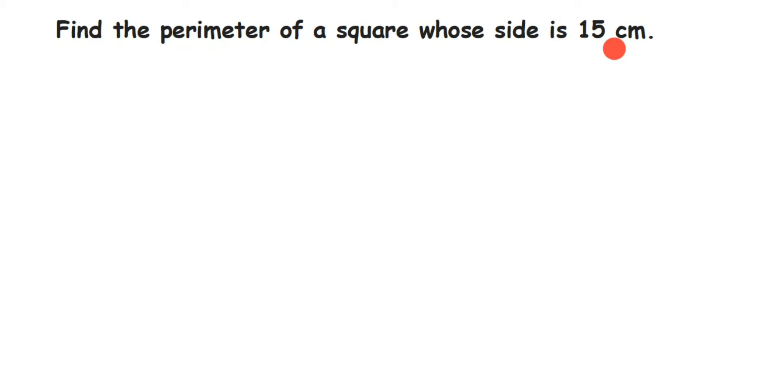So let's find out. What is perimeter? Perimeter is nothing but the boundary of any given polygon. So we have to find out the boundary of the square.